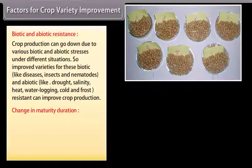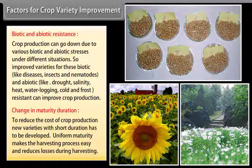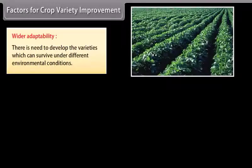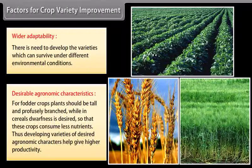Change in maturity duration reduces the cost of crop production; new varieties with short duration must be developed, and uniform maturity makes harvesting easier. Wider adaptability requires developing varieties that survive under different environmental conditions. For fodder crops, plants should be tall and profusely branched, while in cereals, dwarfness is desired so that crops consume less nutrients. Developing varieties with desirable agronomic characters helps give higher productivity.